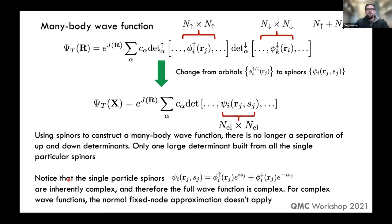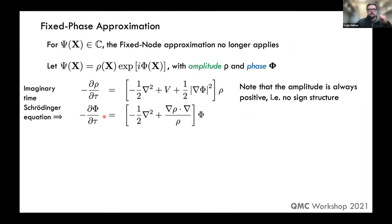An important point: regardless of whether the spatial orbitals are real or complex, multiplying by the complex spin functions e^{±is} makes the spinor inherently complex. The trial wave function is therefore always complex. This means the fixed-node approximation — which requires separating configuration space into positive and negative regions — no longer applies, since that distinction breaks down for complex numbers.